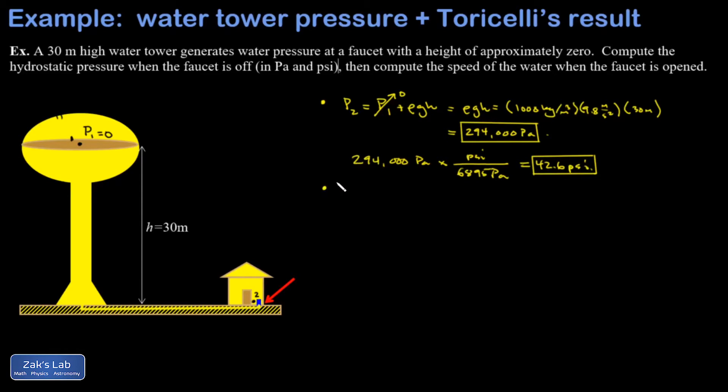In the second part of the problem, we switch to talking about hydrodynamics. I'm going to open up this valve and water starts to flow out. Maybe it's just a sprinkler. And what changes here physically at the faucet is we've now exposed the water at the end of the faucet to atmospheric pressure.